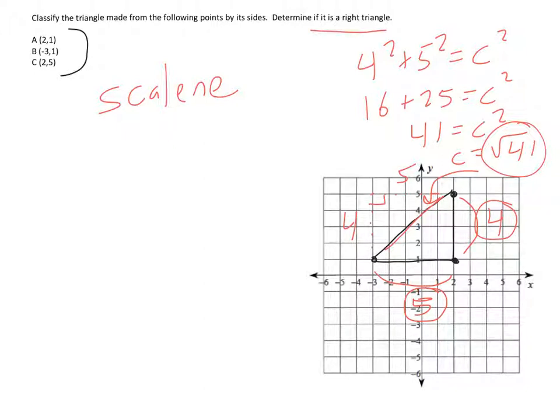And then we say, is it a right triangle? We're just looking for an angle that's 90 degrees. These two are not, but this one, it's a horizontal and a vertical line. We know horizontal and vertical lines will make a right angle. So this is a scalene right triangle as a result.